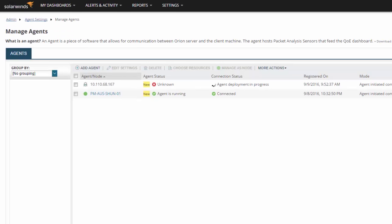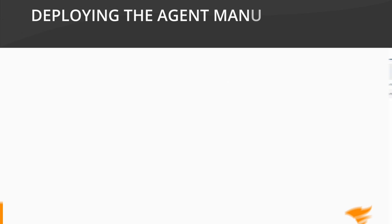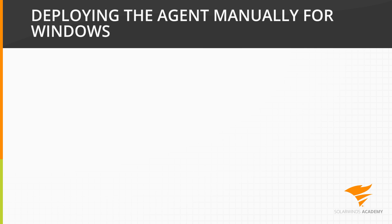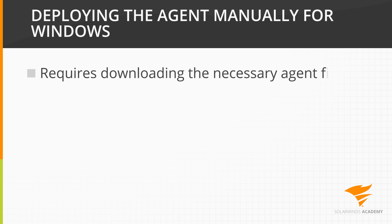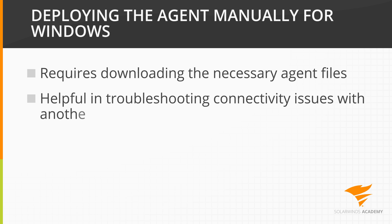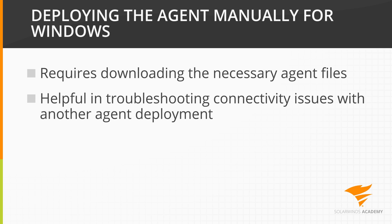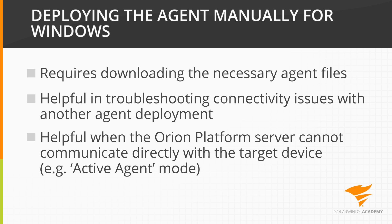At this point, the Orion Platform will install the agent software. Deploying the agent manually for Windows. This method of deployment requires the downloading of the necessary Orion Platform agent files. Selecting this method may be helpful in troubleshooting connectivity issues with another form of agent deployment. This method is also helpful when the server the Orion Platform is installed on cannot communicate directly with the endpoint where the agent will be installed, such as in the case of Active Agent Mode.